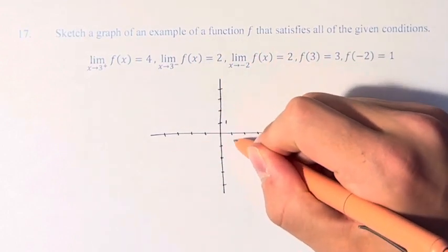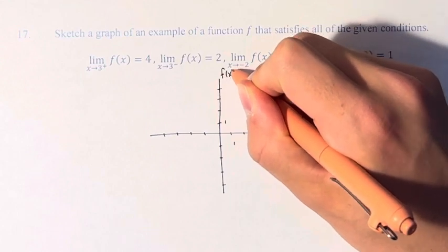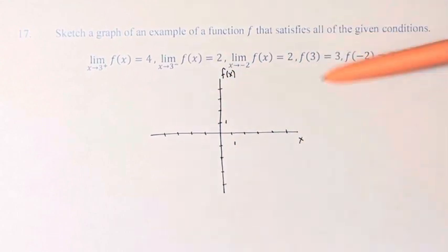We have a graph here, where we're graphing f of x on the y-axis over x on the x-axis. So we have these two values of the function at certain points, so let's put this in first.